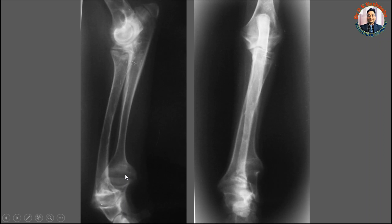In case of rickets, when there is a failure of mineralization of this growth plate, it becomes thickened. From here to here, you can see that there is an increase in the thickness of the growth plate. Similarly, here there is also an increase in the thickness of the growth plate, and you can see there is a widening of the distal metaphysis. Normally it would have been like this, but here you can see there is a widening of the metaphysis, and because of this widening, there is an enlargement of the distal metaphysis clinically as well.